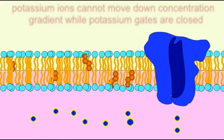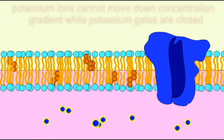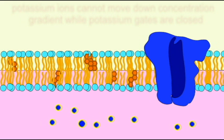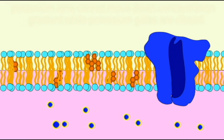They would diffuse out of the cell; however, most of the potassium gates are closed at rest. Therefore, in a resting neuron with a resting membrane potential, these potassium gates remain closed.